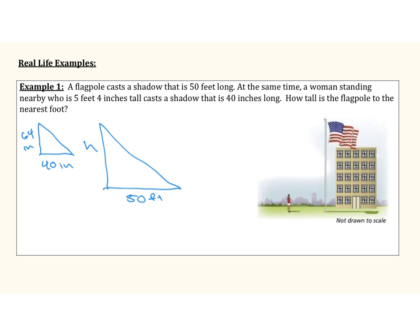Here are the two triangles representing our situation. The woman is 5 feet 4 inches, which I converted to 64 inches, and her shadow is 40 inches. The flagpole's shadow is 50 feet, which we convert to 600 inches so all units match. We now use our similar triangles to solve for the height of the flagpole by setting up ratios.